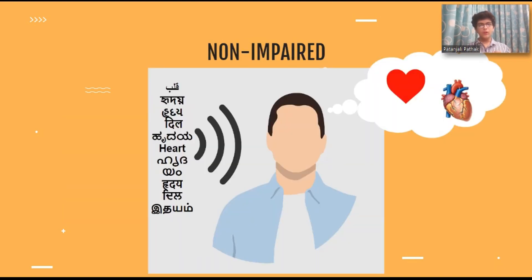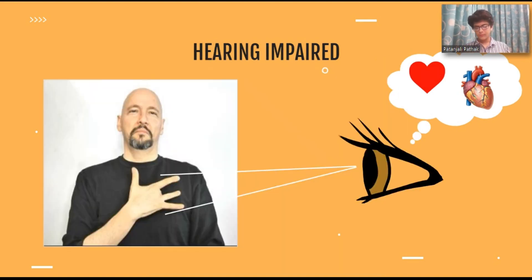In non-impaired people, the information is communicated because we are able to store in our brains the associations between the symbols and sounds of a language and their meanings. This information is received both visually and auditorily. However, due to being impaired, the deaf community must rely upon communication methods which are visual.